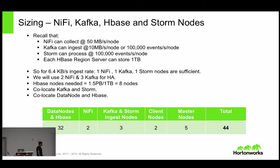NiFi can collect 50 megabytes per second per node; Kafka can ingest 10 megabytes per second per node; Storm can ingest 100,000 events per second per node; each HBase region server can store one terabyte. Doing the full math: you need 32 HBase and data nodes, two NiFi nodes, three Storm and Kafka nodes, two client nodes, and five management nodes — a total of 44 machines in the cluster. HBase and data nodes are co-located; Storm and Kafka are co-located, reducing cost for the customer.